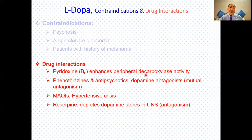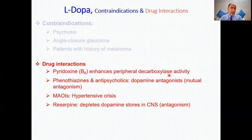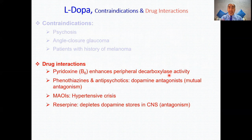Drug interactions: Vitamin B6 (pyridoxine) activates peripheral dopa decarboxylase, the opposite of what we want, so concomitant use with levodopa should be avoided. Phenothiazines and butyrophenones are dopamine antagonists, causing mutual antagonism with levodopa. Reserpine depletes dopamine stores in the CNS. MAO inhibitors, by inhibiting degradation of dopamine, norepinephrine, and epinephrine, can cause a severe hypertensive crisis if used with levodopa at high doses for a long time.